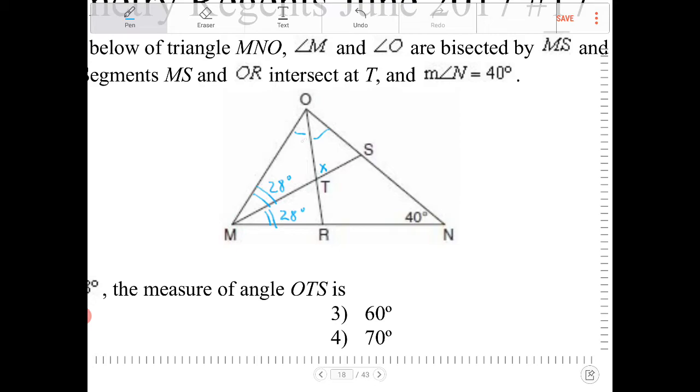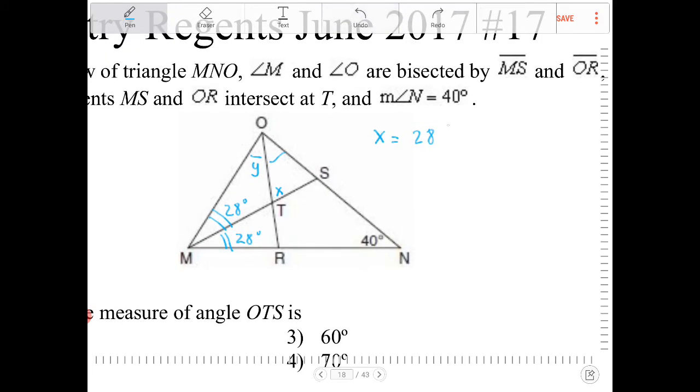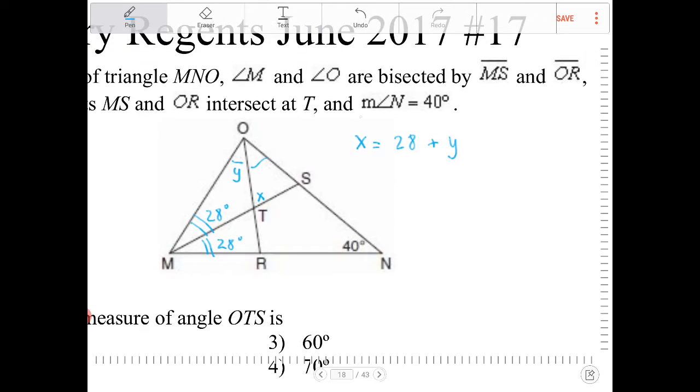So I'm going to call this angle MOT, I'm going to call that angle Y. So I know that X is going to equal 28 plus angle Y. This is the exterior angle theorem. Exterior angle theorem.